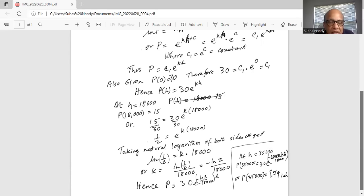Hence p is equal to 30 times e to the minus ln 2 divided by 18,000 multiplied by h. The natural number raised to this product of these quantities.